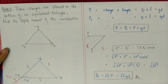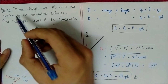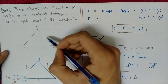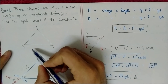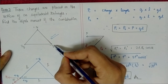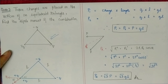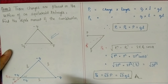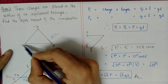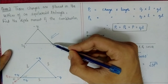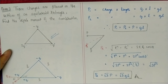Question 3: Three charges are placed on the vertices of an equilateral triangle — two vertices carry −q each and one carries +2q. Find the dipole moment of the combination. The first challenge is identifying dipoles: a dipole must be equal and opposite. Pairs of −q and +2q are opposite but not equal, so no direct dipole exists.